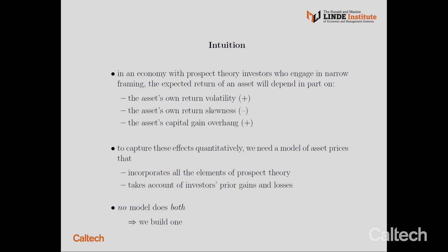Now, let's consider capital gain overhang. Suppose the investor has a gain in the asset — then he becomes risk-averse according to diminishing sensitivity, and he would like to sell the asset to realize the gain, to consolidate the profit. That selling pressure would push down the current price of the asset and push up its expected return. Conversely, if the investor has a loss in the asset, he becomes risk-seeking and wants to hold on to or even buy more of the asset, hoping it will break even in the future — and that buying pressure pushes up the current price and then pushes down its expected return. So overall, capital gain overhang has a positive relationship with expected return.